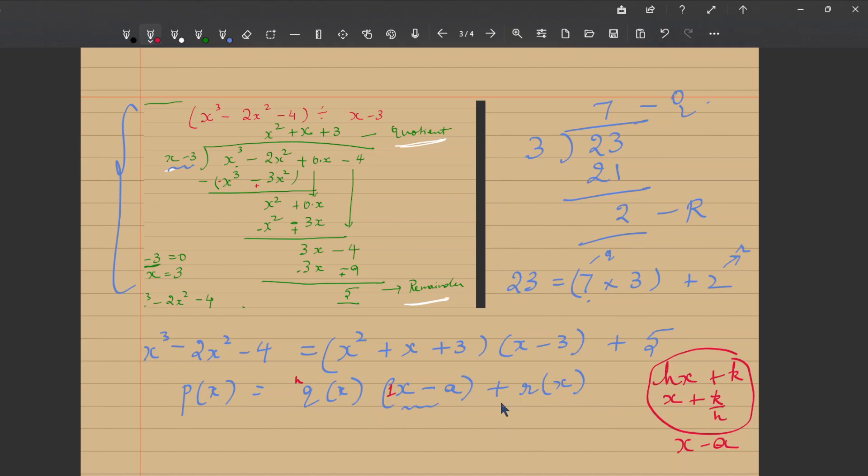You will understand why we are using this form x minus a form of the linear polynomial as we go further. Now, I hope this is clear to you till here: q of x into x minus a plus r of x. But since we mentioned specifically that this is a linear polynomial, the remainder has to be at least lesser than 1, lesser than 1 because linear polynomial degree is 1. This has to be of degree lesser than the linear polynomial. Lesser than 1 means it is a degree 0, which is a constant. So you can just write it as r.